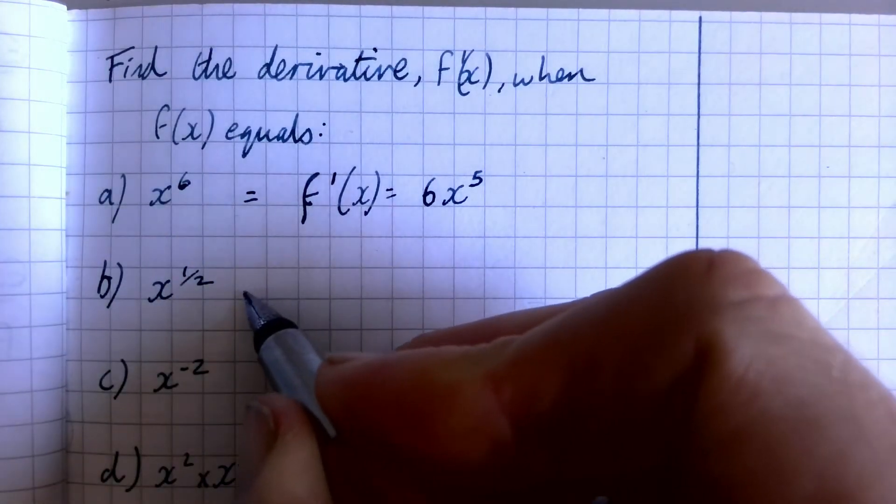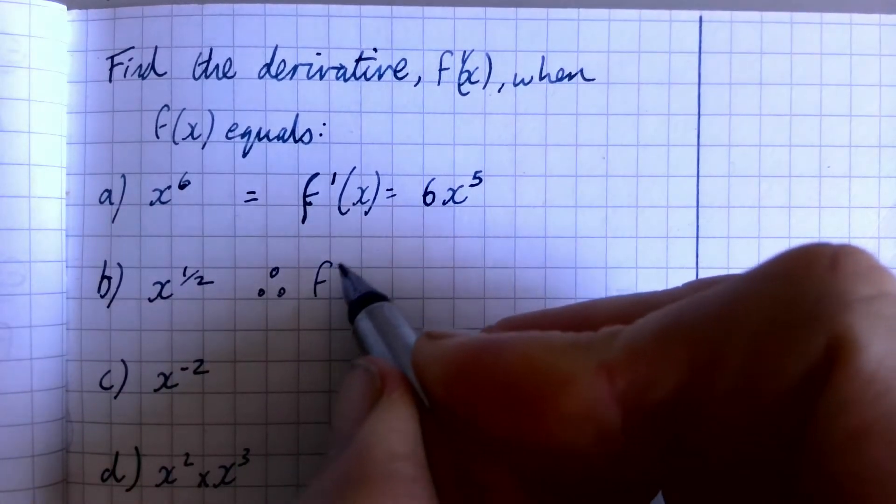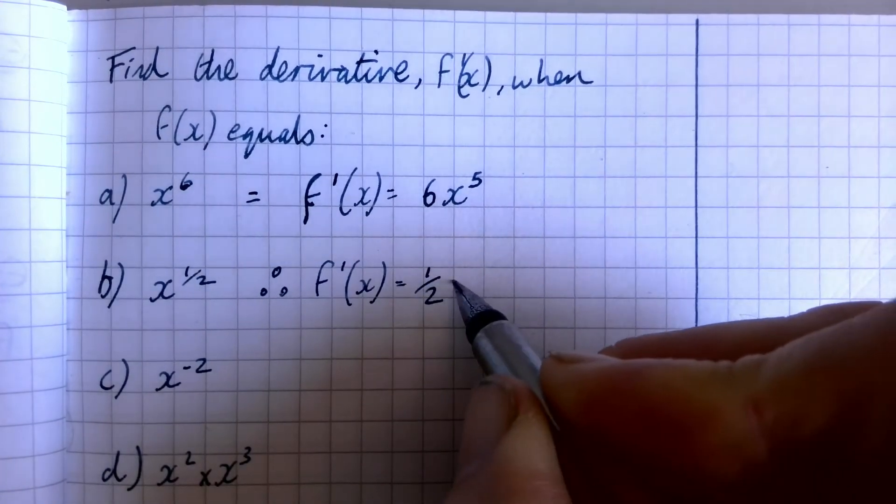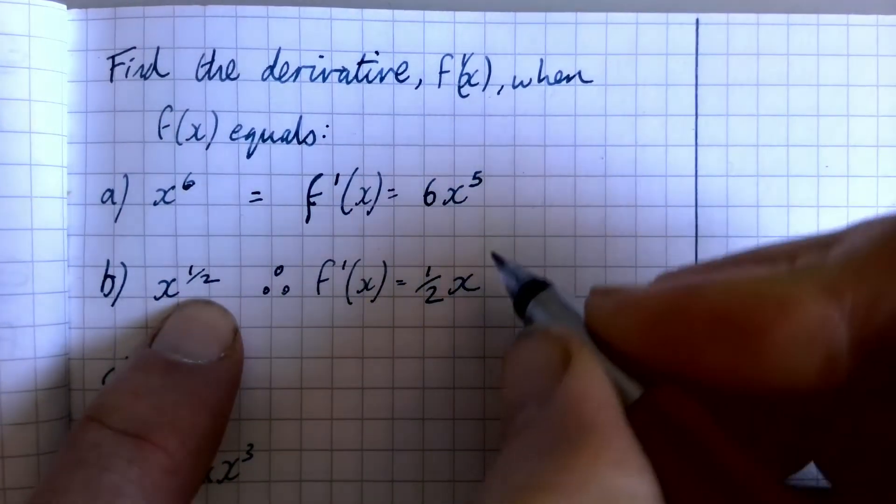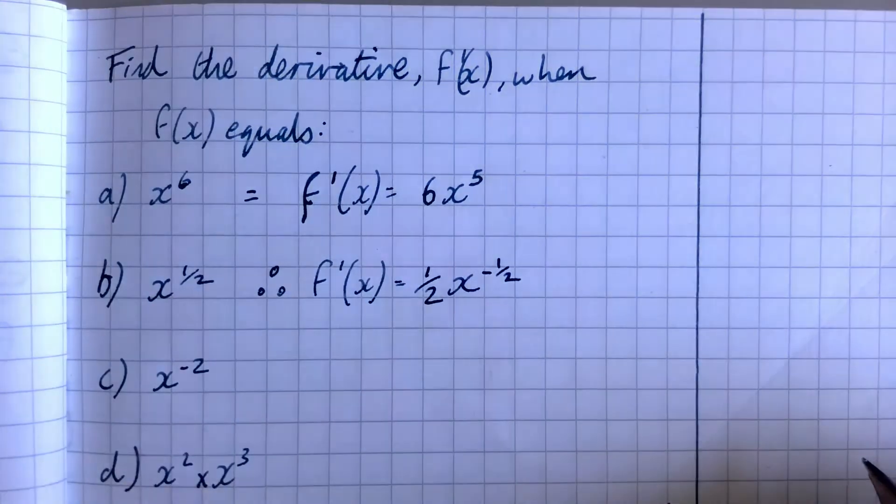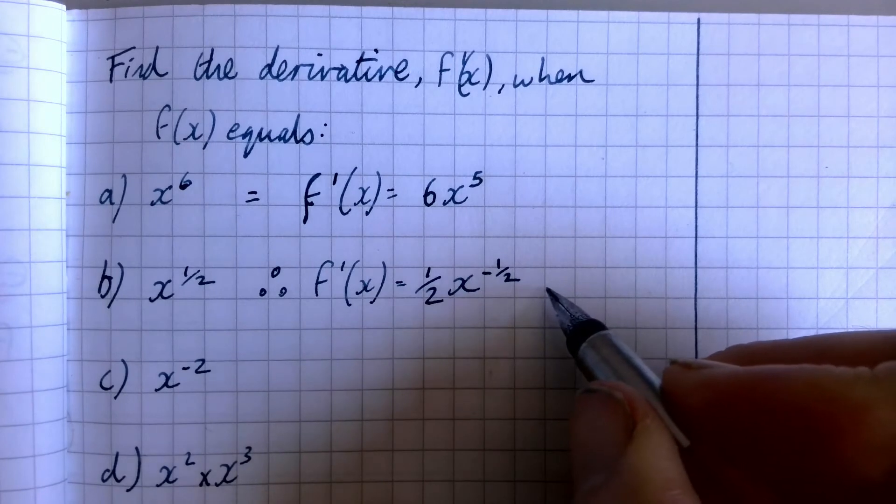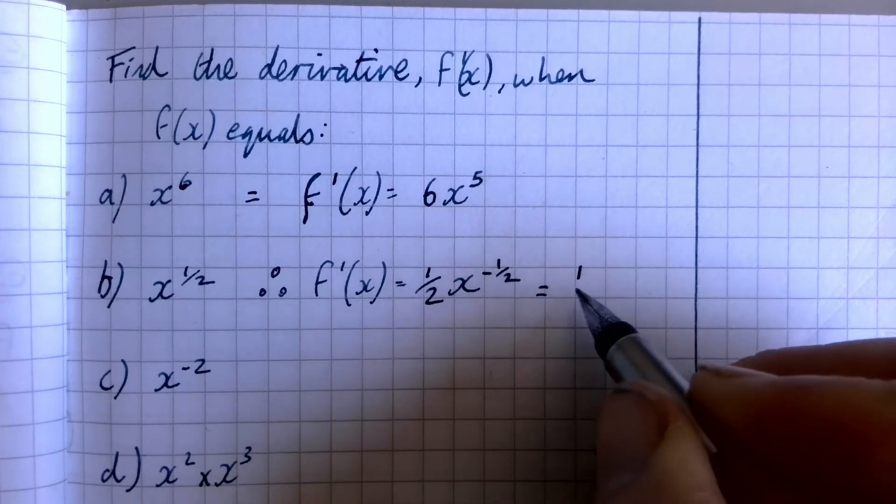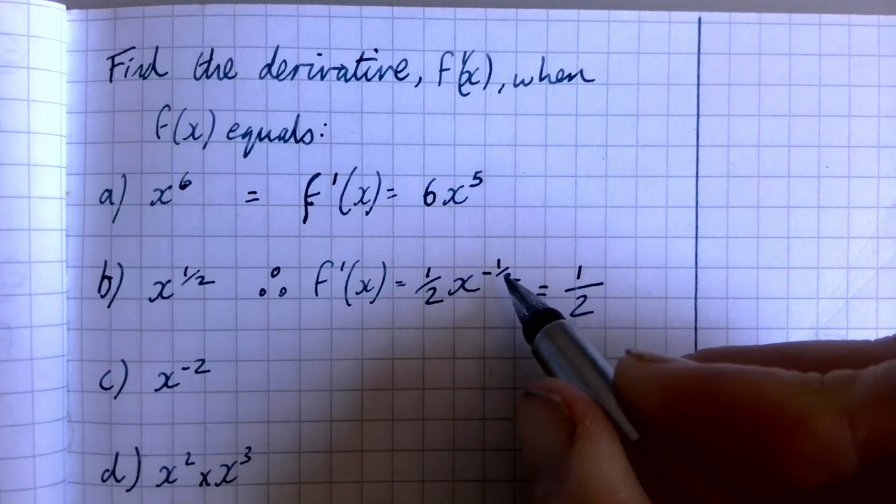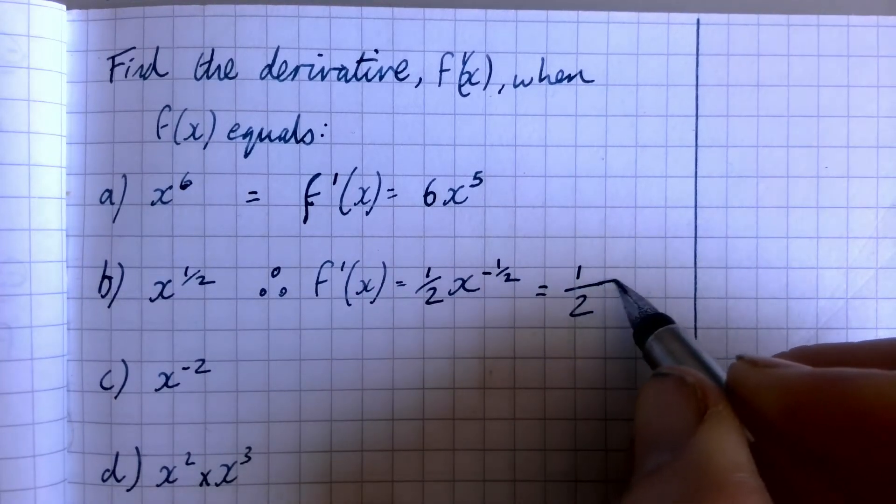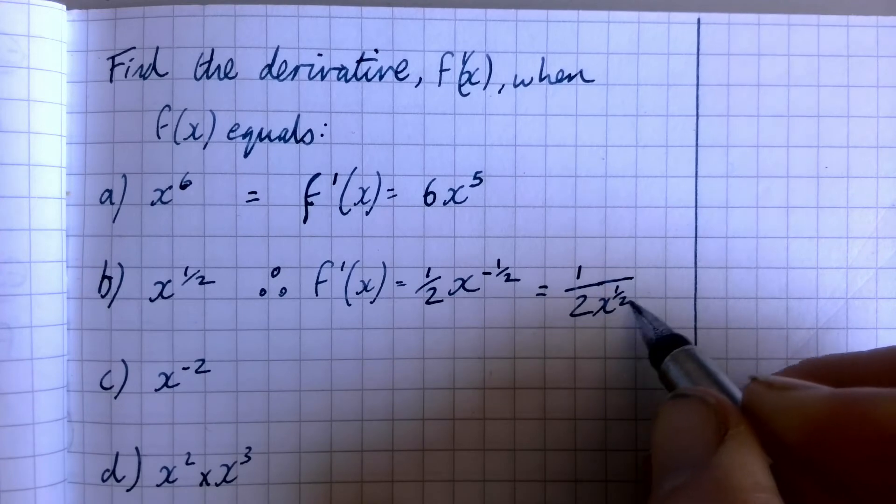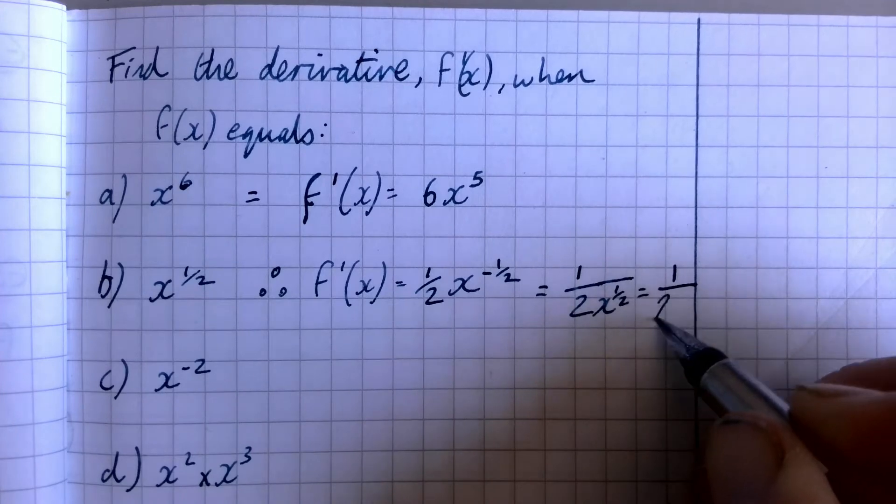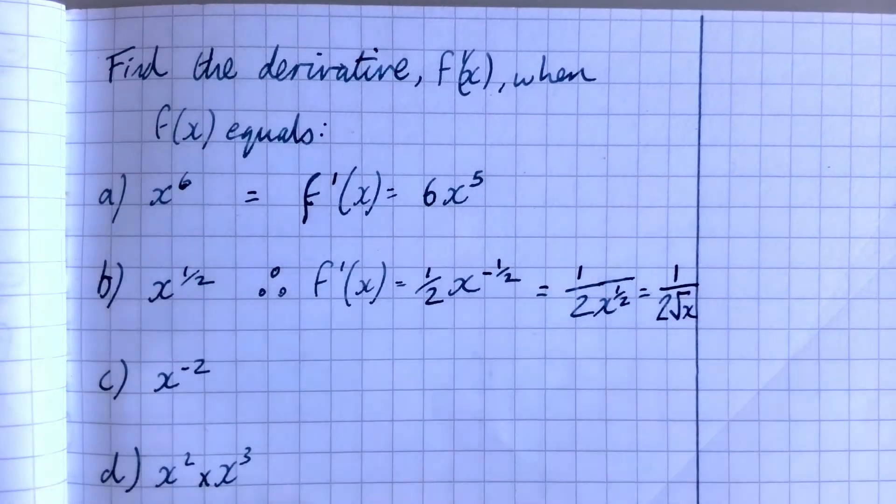But the second one, we multiply by the power, so we put a half in front of it, take one away from a half, and I get negative a half. Now that's not the simplest way we could be thinking about that. So we've got one over two. If I want a positive power, then that would need to be underneath. So that would be x to the power of a half. And remember, the power of a half is a square root, so we could write that as one over two root x.